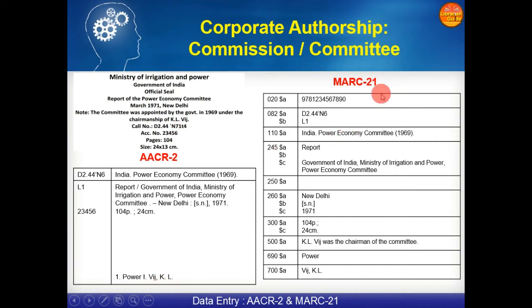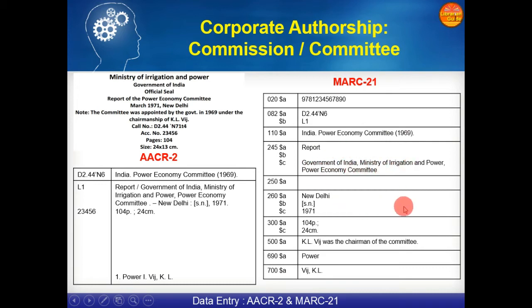Now let's see how we enter this in MARC 21 format. Field 020 for ISBN, 082 for call number. Field 110 will have the main entry: 'India. Power Economic Committee' in brackets 1969 — this is the case of a commission or committee report under corporate authorship. Field 245 dollar a will contain 'Report,' dollar c will contain statement of responsibility. Field 260 for publication detail, 300 for physical description. Field 500 will contain general notes like K.L., who was the chairman of the committee. Then subject fields, and field 700 dollar a will contain the added entry.